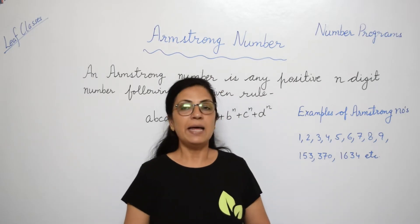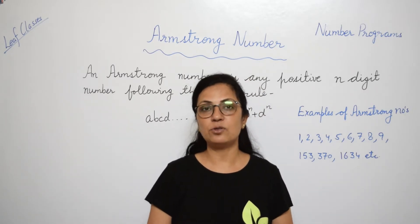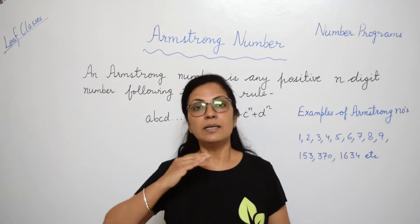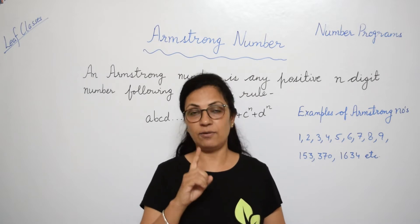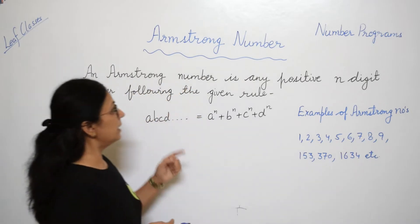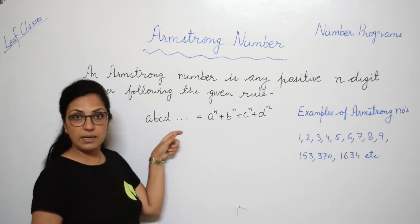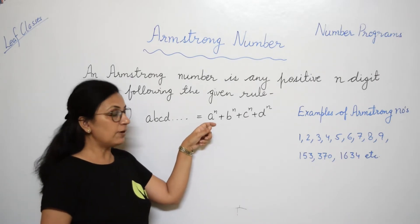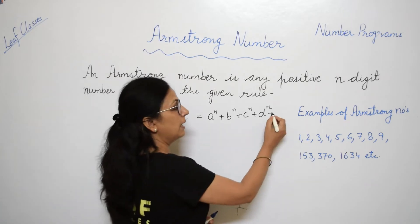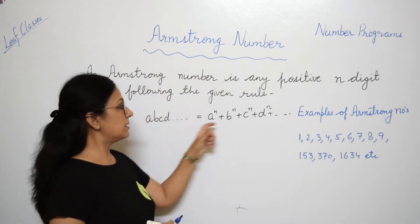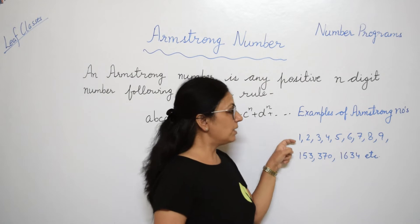What is an Armstrong number? Many of you have the misconception that it is the sum of the cubes of the individual digits, but that is not the correct definition. An Armstrong number is any positive n-digit number that follows this rule: if the number is a, b, c, d, then a^n + b^n + c^n + d^n and so on — if this sum is equal to the number, then that number is known as an Armstrong number.